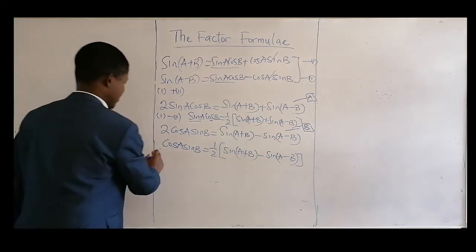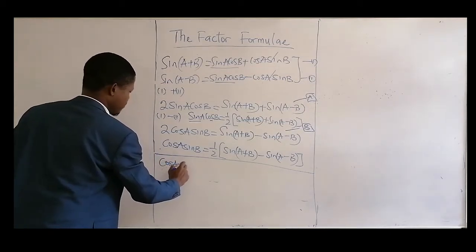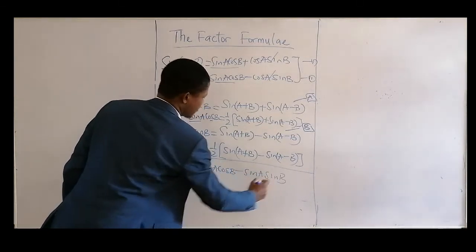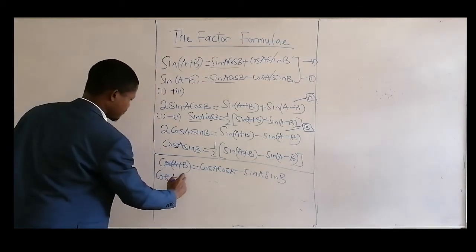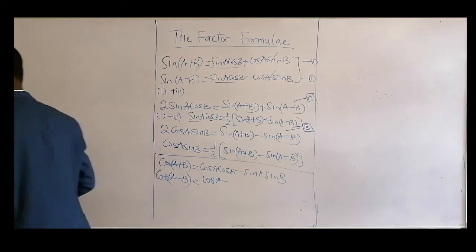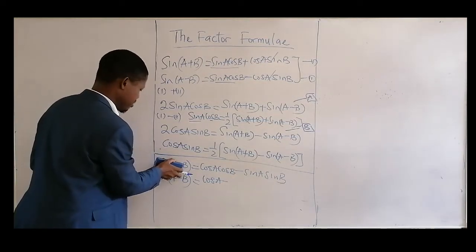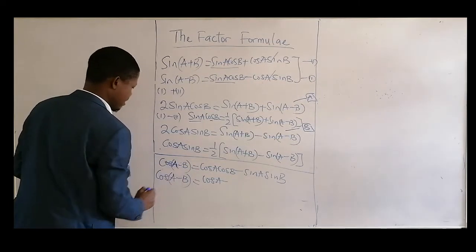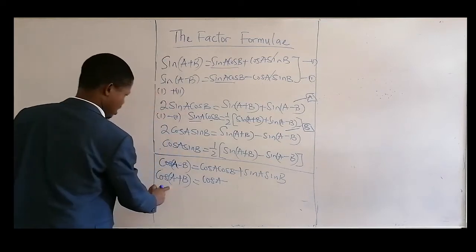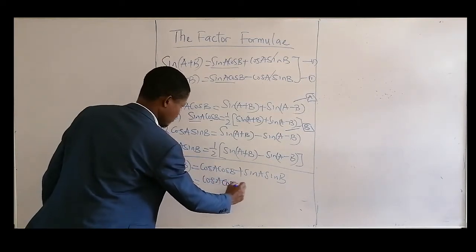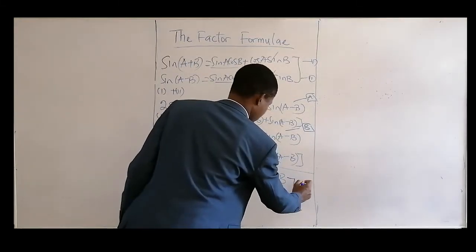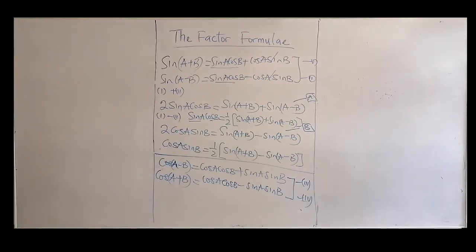Now let's quickly go to the cosine function. cos(A + B) equals cos A cos B minus sine A sine B. And cos(A − B) gives cos A cos B plus sine A sine B. Call these equations three and four.